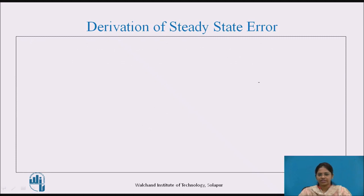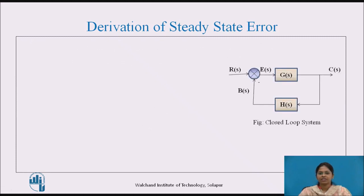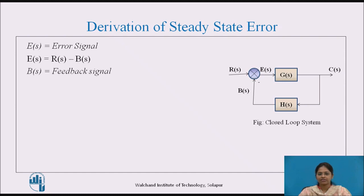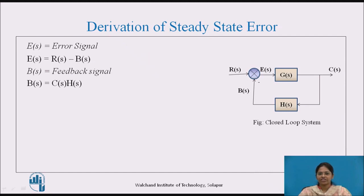Let's see the derivation of E(s). Consider a simple closed-loop system using negative feedback as shown in the figure, where E(s) is the error signal. From the figure, it can be written as E(s) = R(s) − B(s). B(s) is the feedback signal and from the figure it can be written as B(s) = C(s)·H(s). Substituting B(s) in equation 1, we get the error signal as E(s) = R(s) − C(s)·H(s).